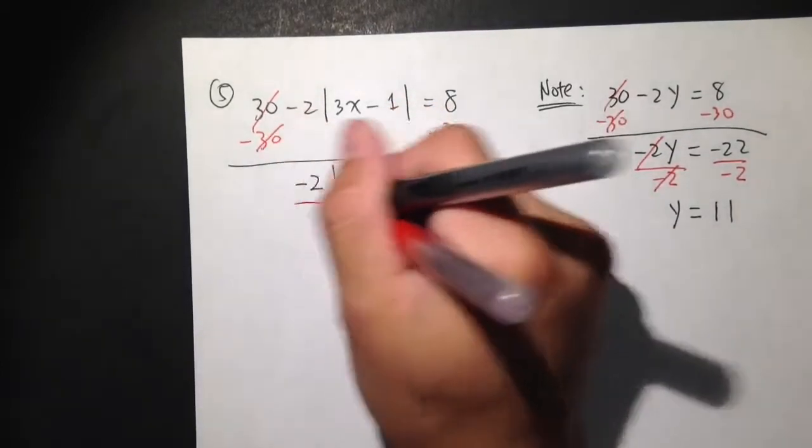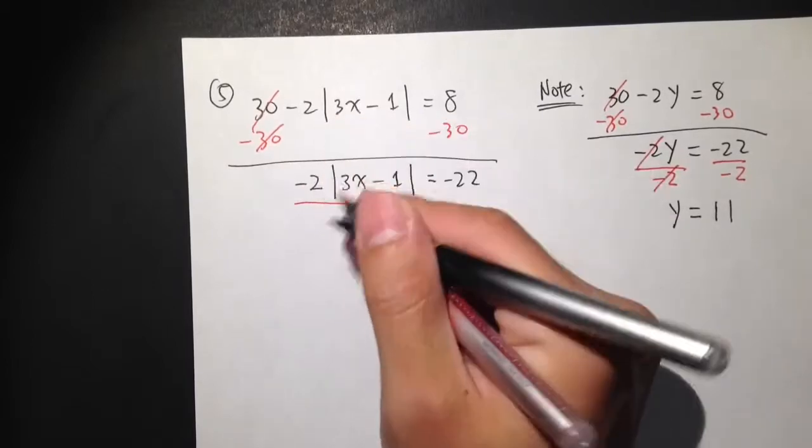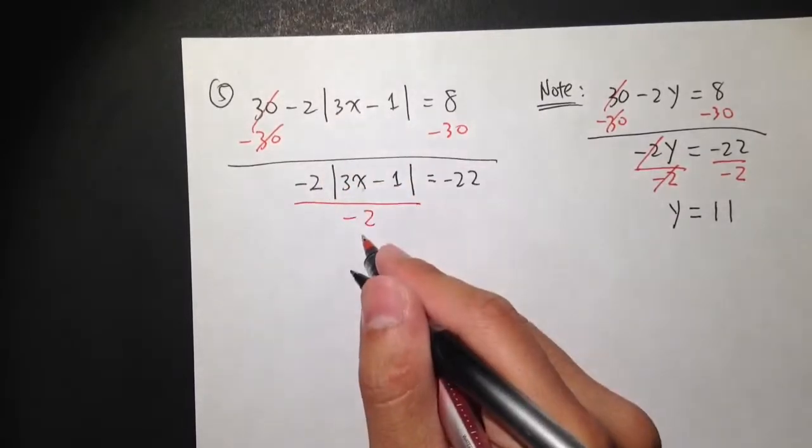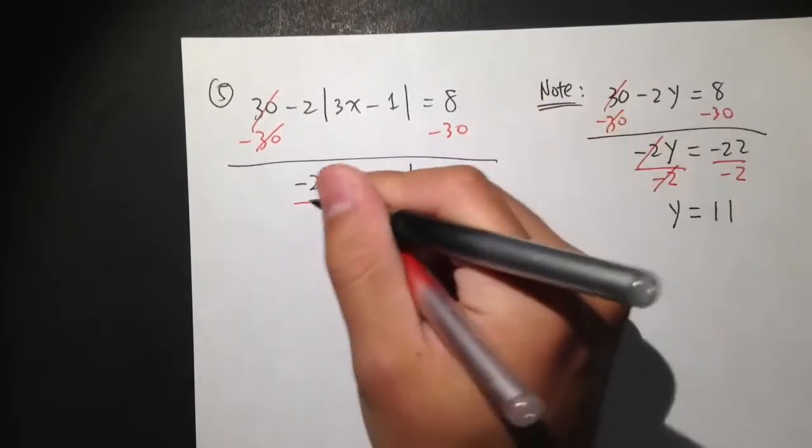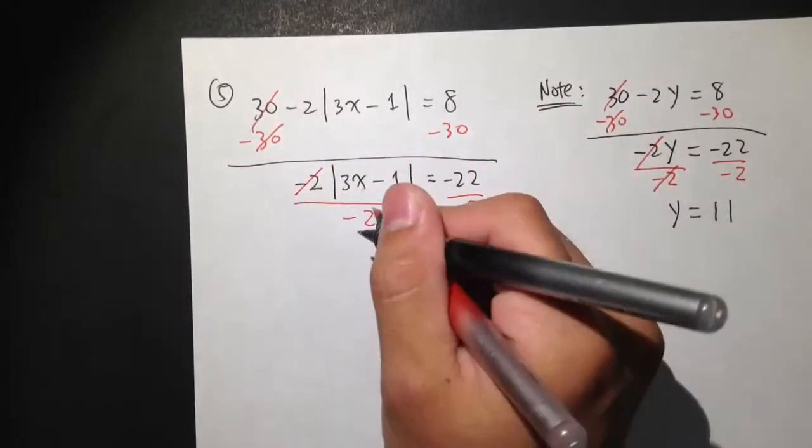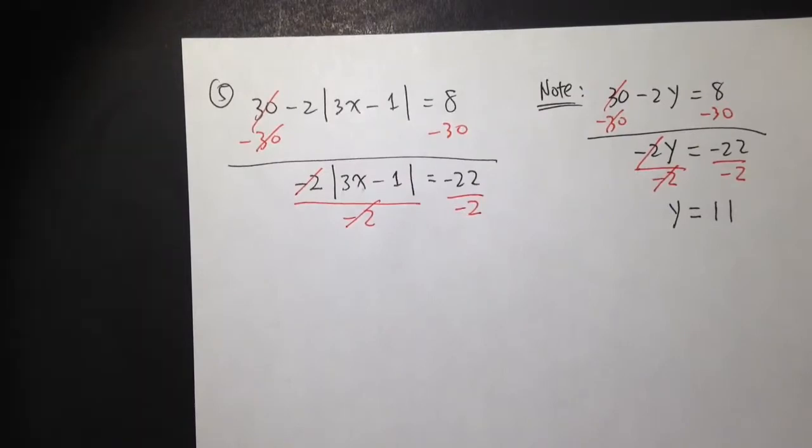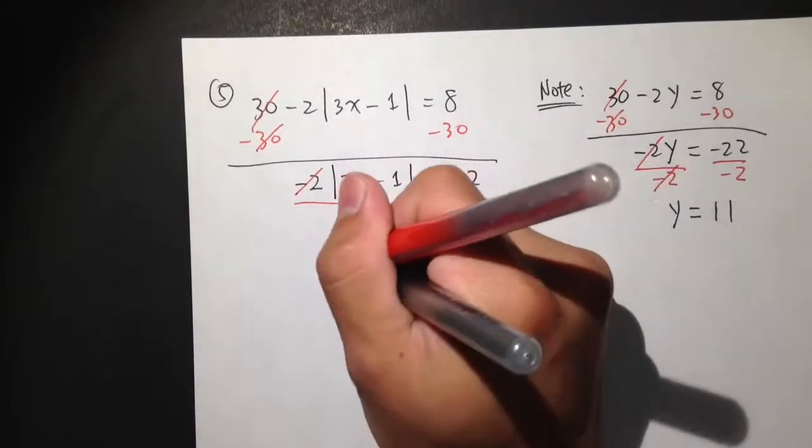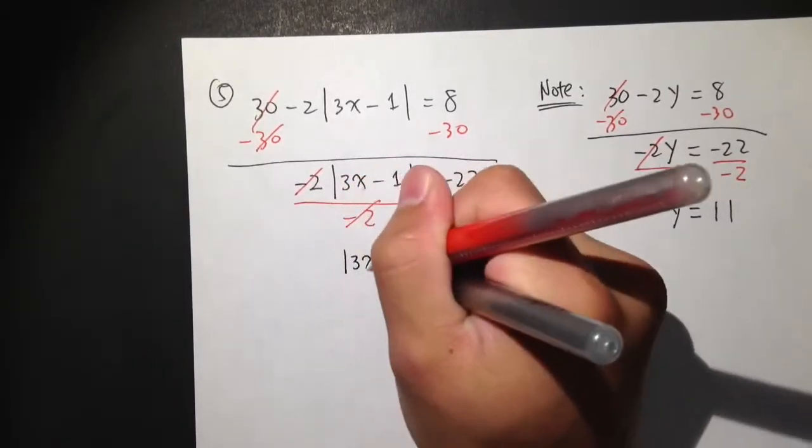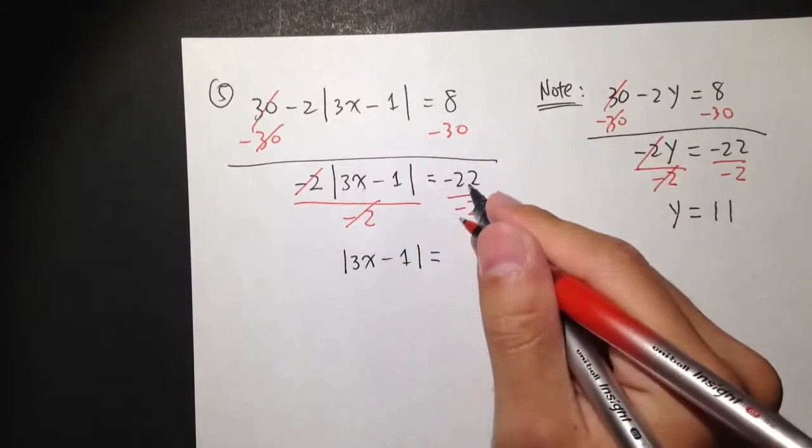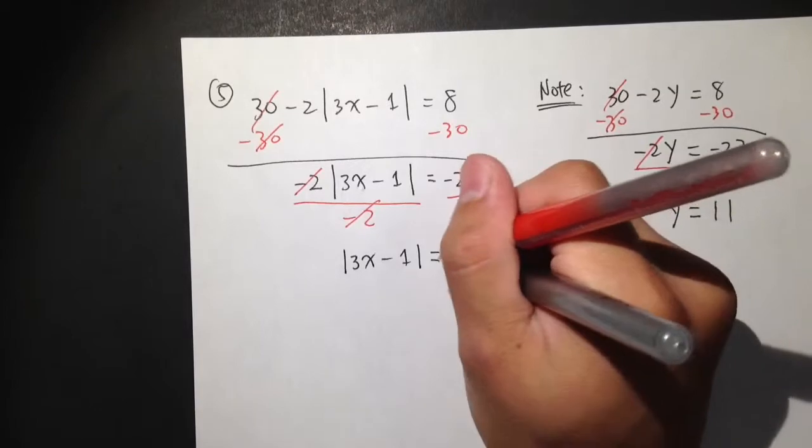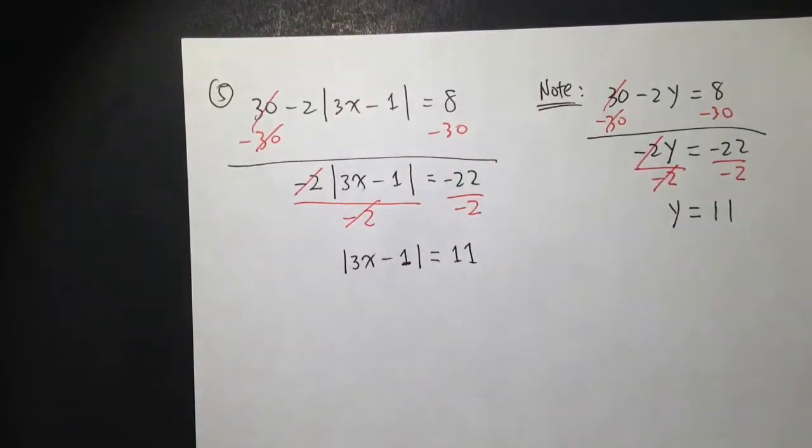We are going to divide, because here is multiplication. We are going to divide by negative 2 on both sides. So this negative 2 and that negative 2 will cancel. And then we did it. We have absolute value of 3x minus 1 equal to negative 22 divided by negative 2, which is positive 11.